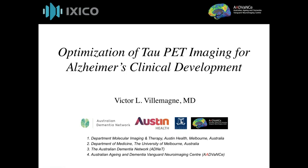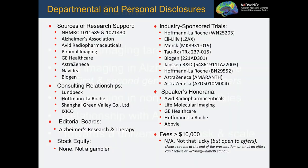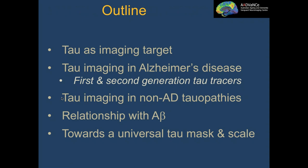Good day everybody. I will talk about the optimization of TAU PET imaging for Alzheimer's clinical development. The presentation outline covers: TAU as an imaging target, TAU imaging in Alzheimer's disease, first and second generation TAU tracers, TAU imaging in non-AD tauopathies, the relationship of TAU with amyloid, and finally a universal TAU mask and scale.